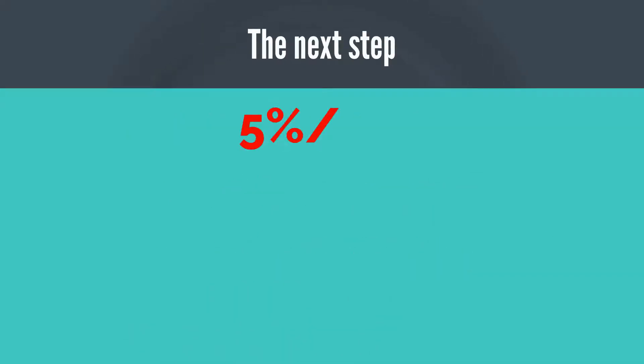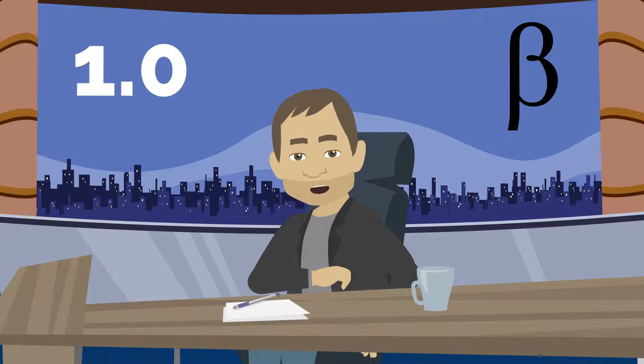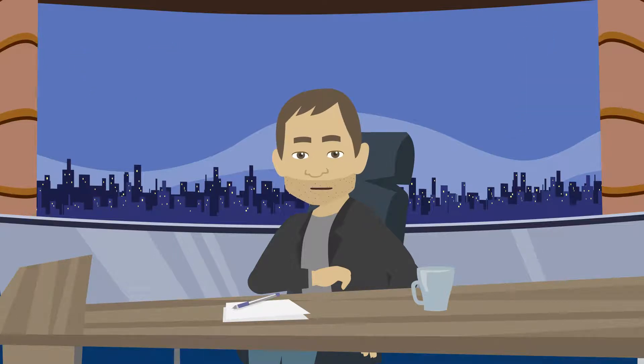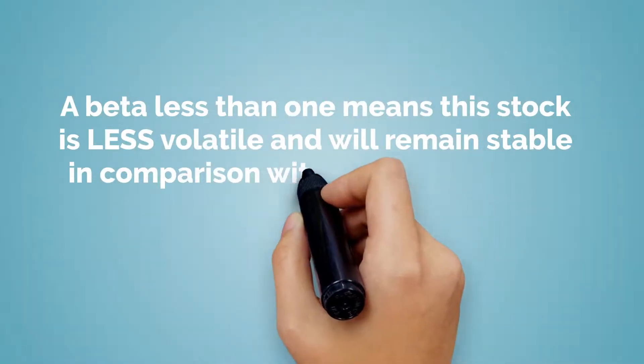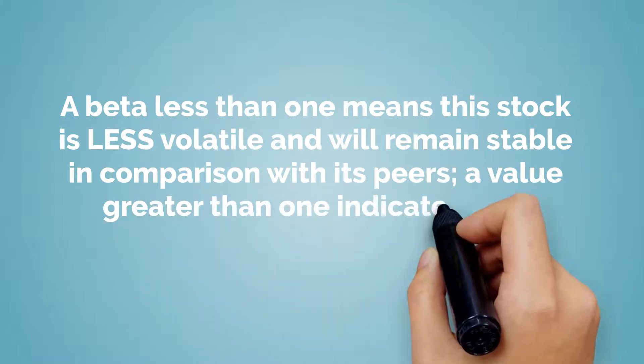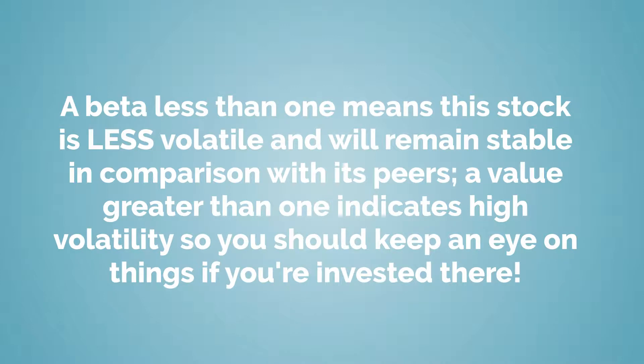The next step is to divide the first difference, 5%, by the second difference, 3%. The fraction is the beta figure which will be expressed as a decimal value. The beta of the market itself or the appropriate index is by definition 1.0 as it's being compared to itself. Any number divided by that same number equals 1. A beta less than 1 means this stock is less volatile which will remain stable in comparison with its peers. A value greater than 1 indicates high volatility so you should keep an eye on things if you're invested there.